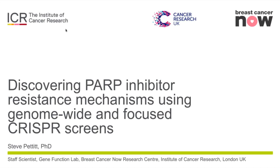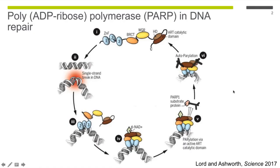PARP stands for poly ADP ribose polymerase, and there are various different PARP family members in the cell. For the purposes of this talk and when discussing PARP inhibitors in cancer, we're mostly interested in PARP1, which is the most abundant PARP in the cell. PARP1 is expressed at very high levels in the nucleus and is involved in various different processes, but the one of most interest to cancer is its role in DNA repair. PARP acts as a sensor and mediator of DNA damage repair.